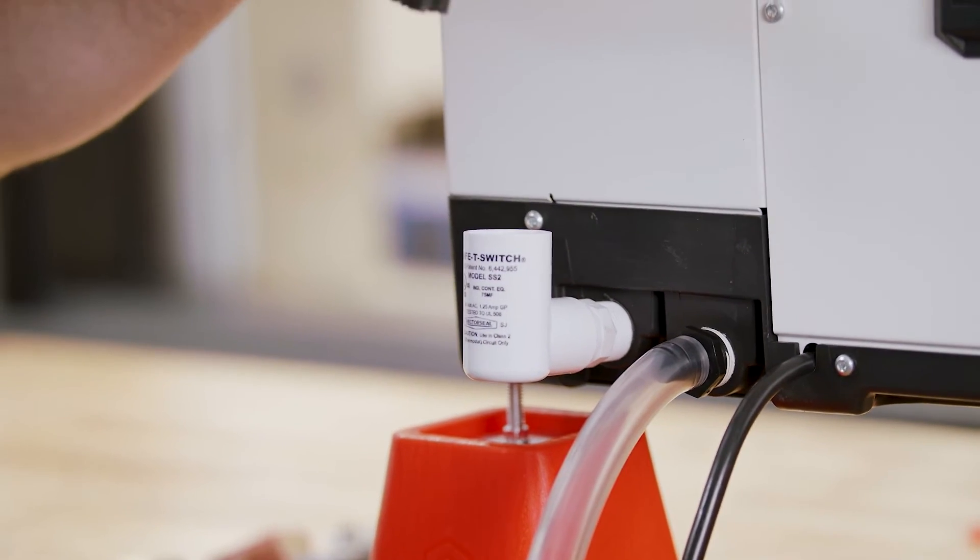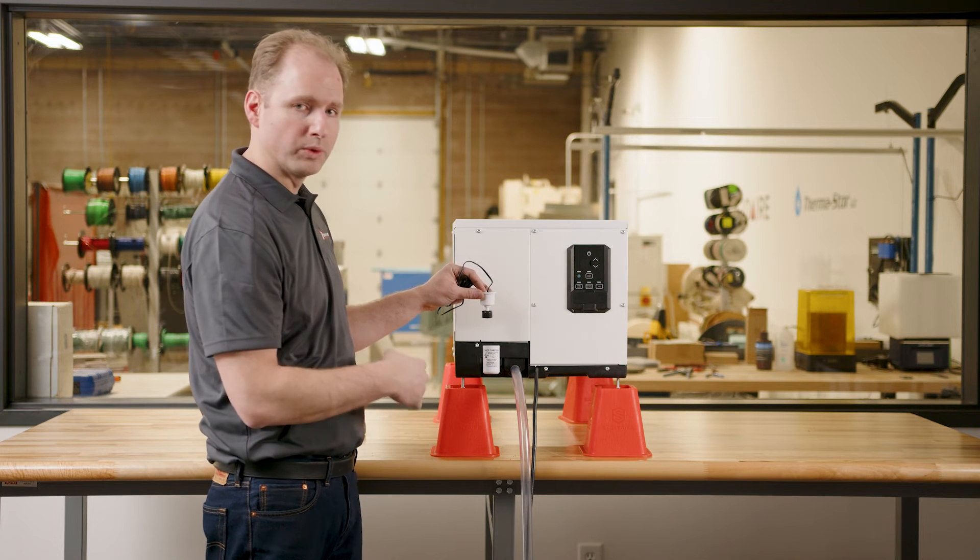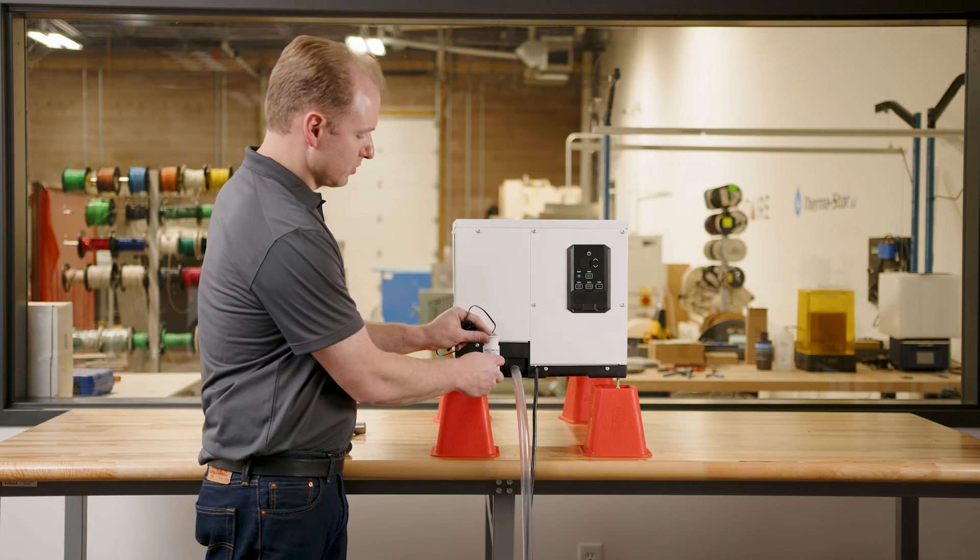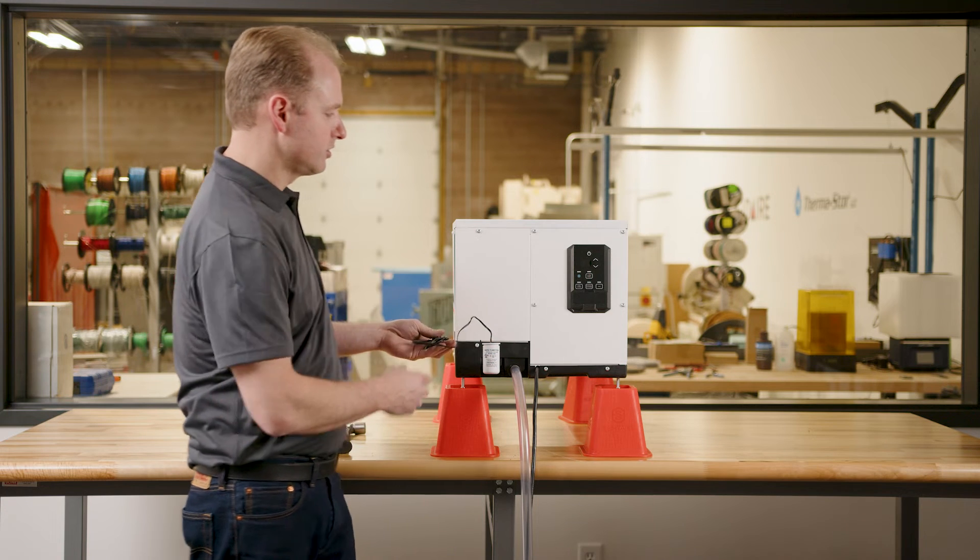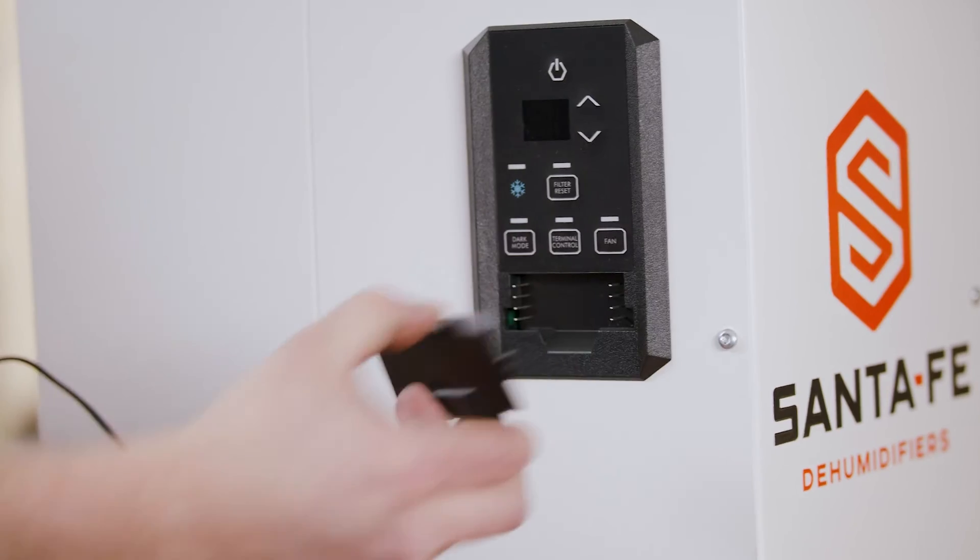This float switch, if the unit becomes plugged, will rise and that will trigger the control to turn off. We will have to wire the float switch into the control. To do this, the control terminal block removes like so.